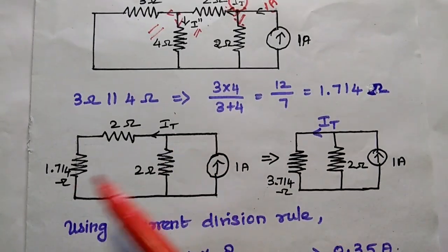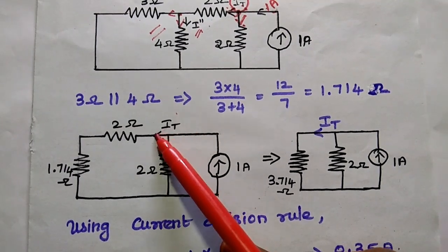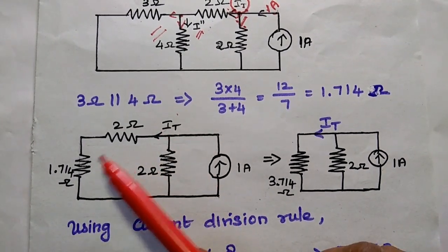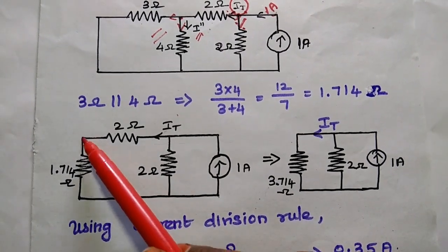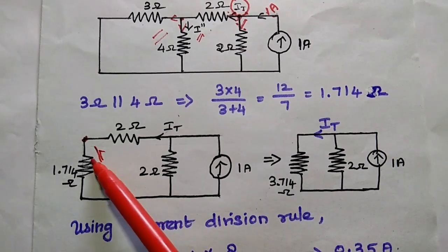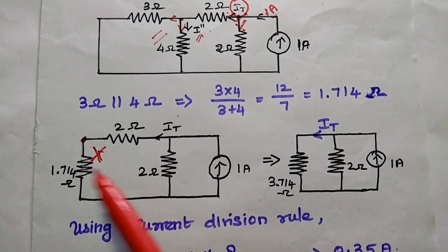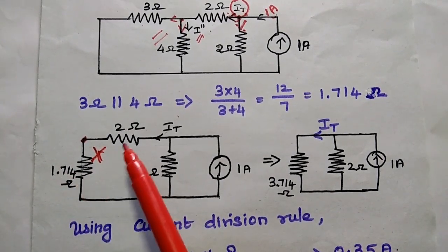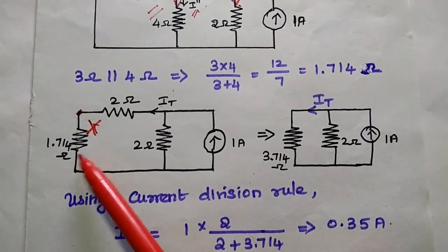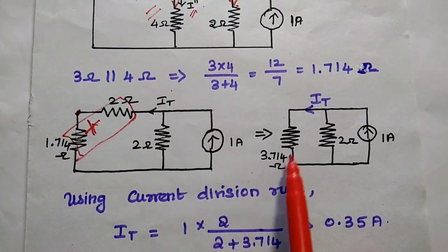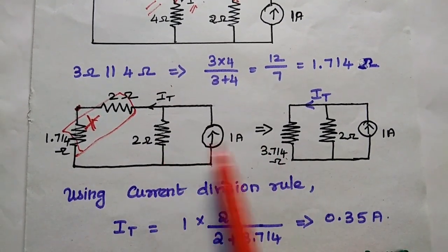These two can be replaced with 1.714 ohm. Now we find the current through this path: these two resistors are in series, so their resistance values are added: 1.714 + 2 = 3.714 ohm. This combination is now in parallel with this 2 ohm resistor.